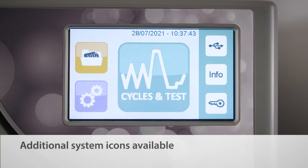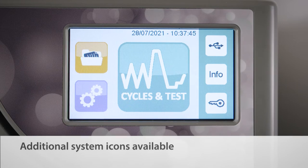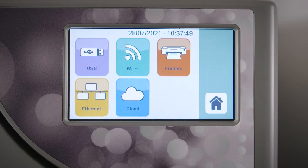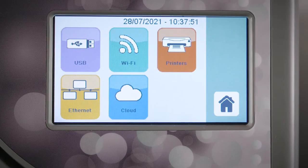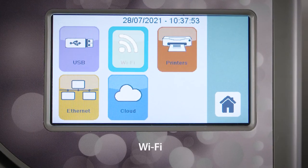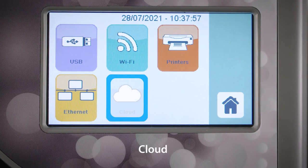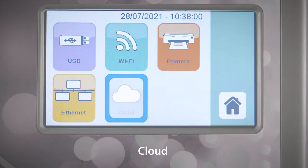There are also some additional system icons available. Select the Data Management icon to set how you would like the unit to log cycle data. With the option of USB, Wi-Fi, printer, Ethernet, and cloud icons, select the icon that best suits your data logging needs. All cycle data stored in the internal memory of the sterilizer should be transferred onto the USB.